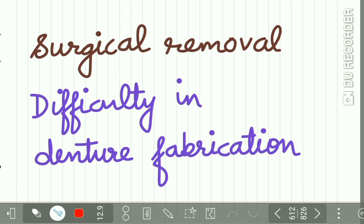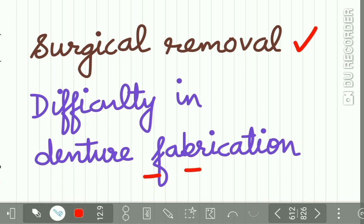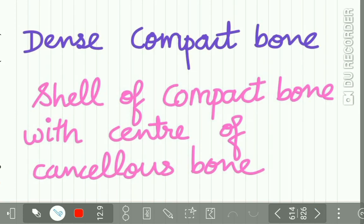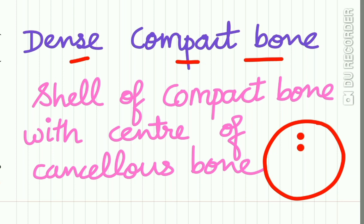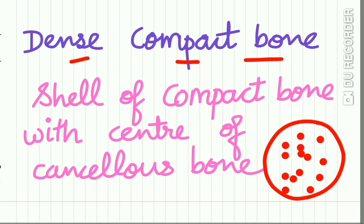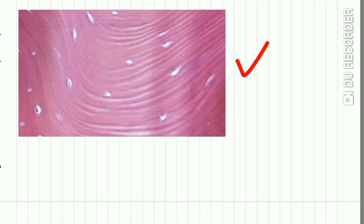Treatment includes surgical removal of the lesion, because denture fabrication is difficult in such cases. Regarding histopathology, torus mandibularis is composed of dense compact bone, and sometimes there may be a shell of compact bone with a center of cancellous bone. Here you can see the dense compact bone in the histology of torus mandibularis.